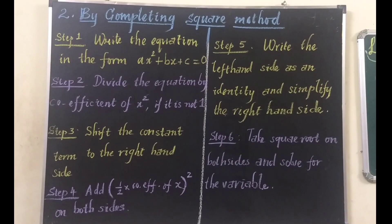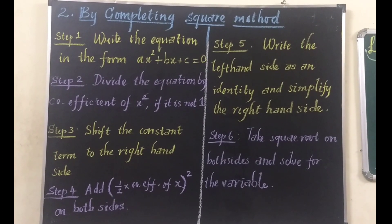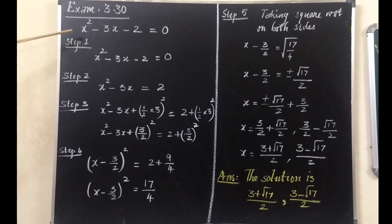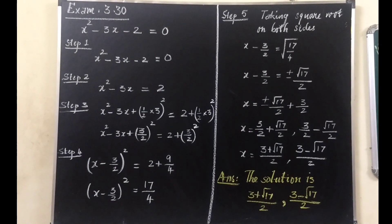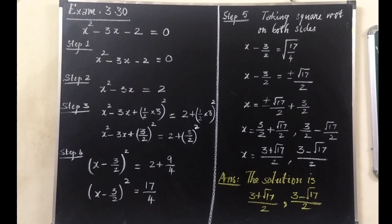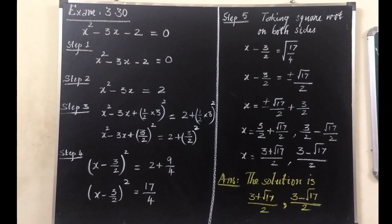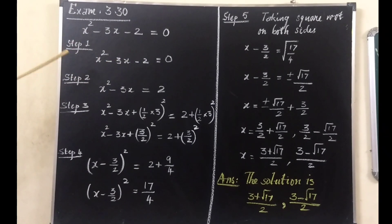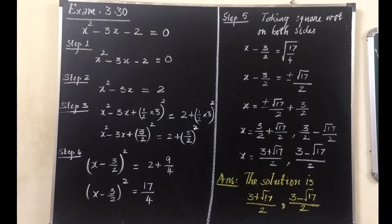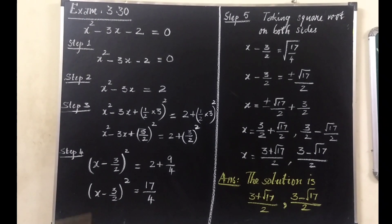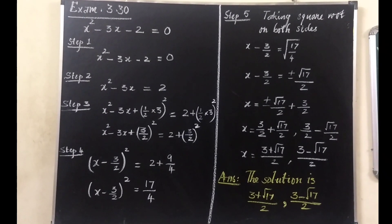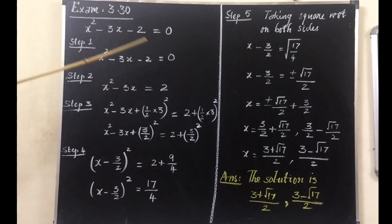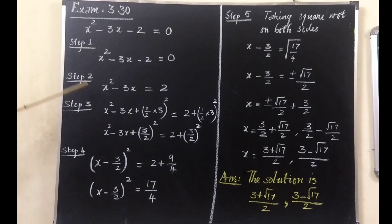For completing square method we follow these 6 steps to find the solution. Keep in mind: if it is asked to use this method, then use it; otherwise we can use the factorization method or the formula method. Look at Example 3.30 — a quadratic equation is given. We are going to use the completing square method to solve this. First step: we look at the equation to check whether it is in the correct format. Yes, it is: x squared minus 3x minus 2 equals 0, which is of the form ax squared plus bx plus c equals 0. No changes needed.